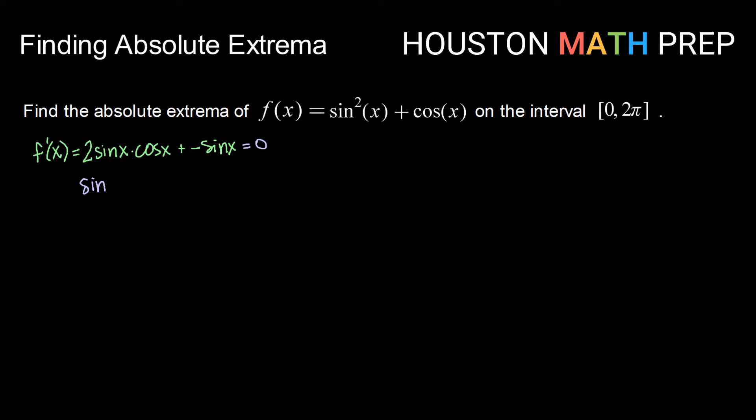So here we are going to need to set this equal to 0 to find our critical points. So factoring out a common factor of sin x, that leaves us with 2 cosine x minus 1. If we set each of those factors separately equal to 0, then sin x equals 0, and 2 cosine x minus 1 equals 0. Solving this one for cosine x, that gives me cosine x equals 1 half.